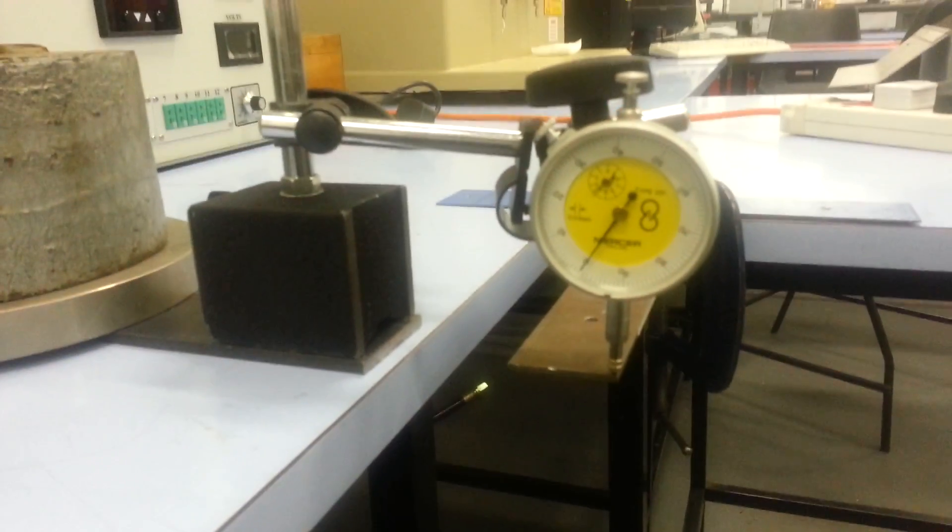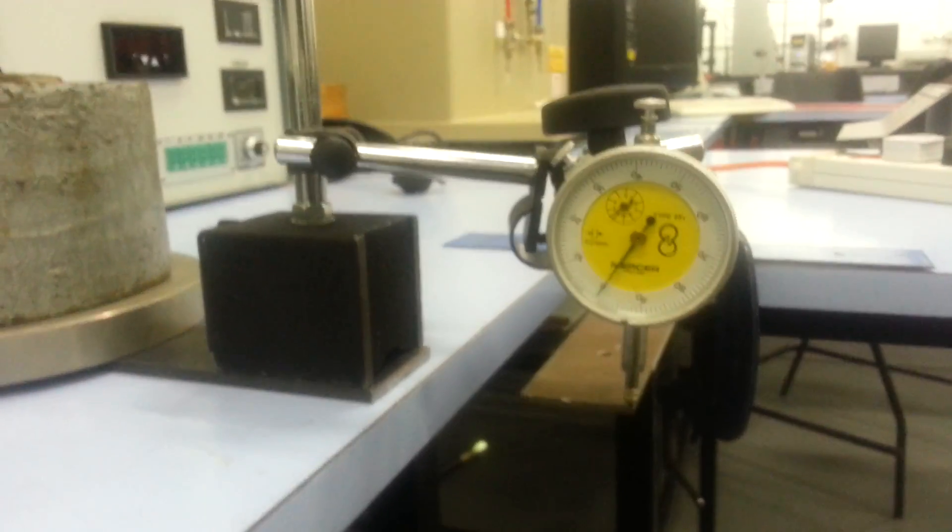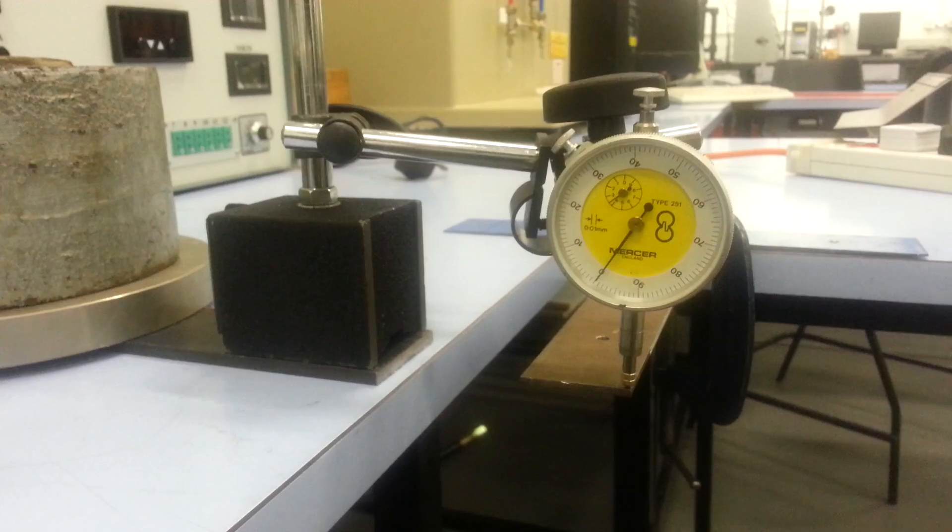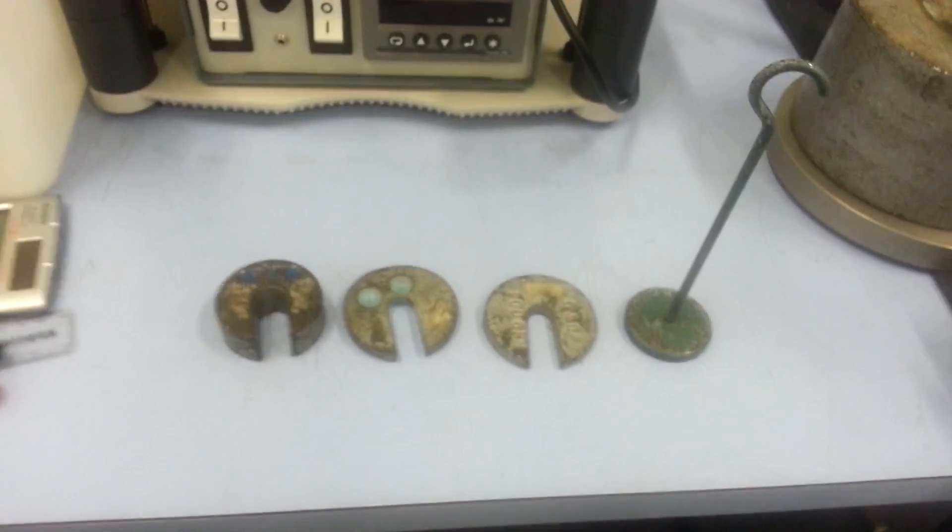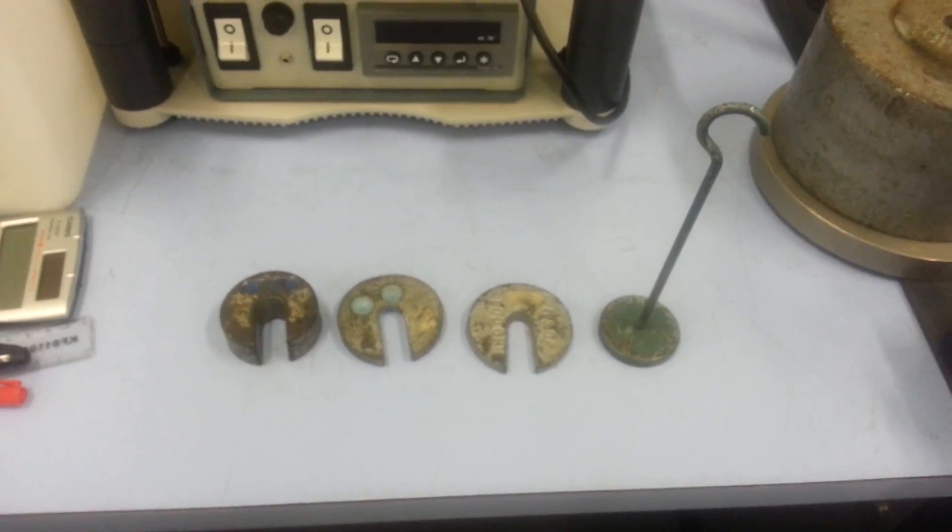At the tip we have a dial gauge, as you can see here, and it is graduated in 0.01 mm per division. We are going to apply at its tip some weights, as you can see here.